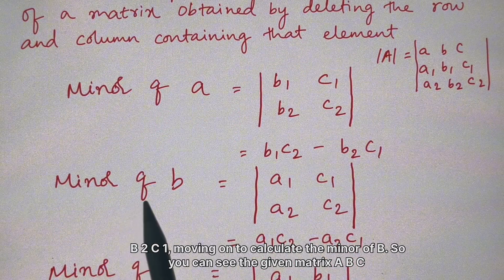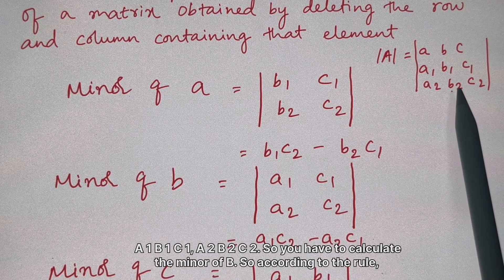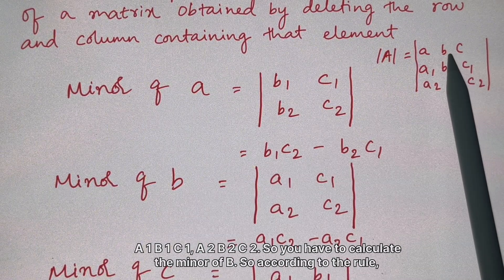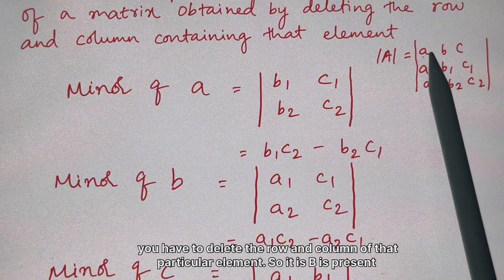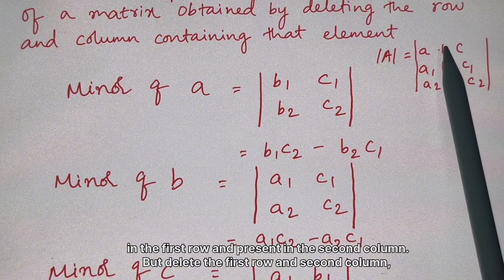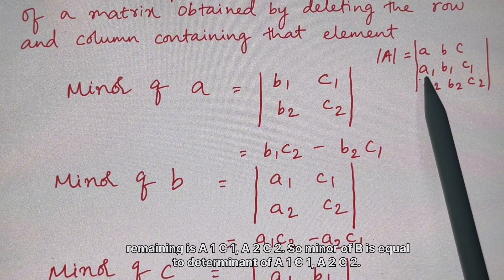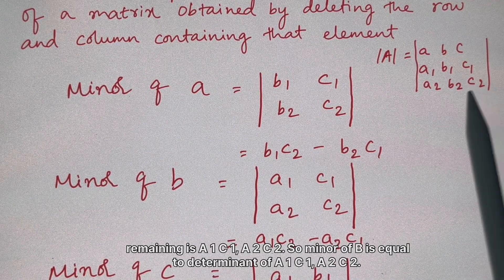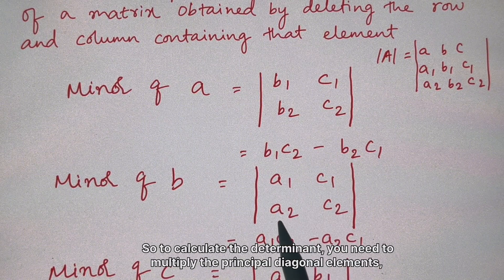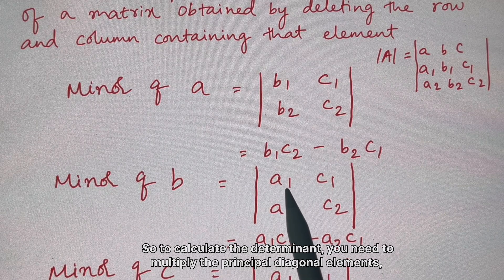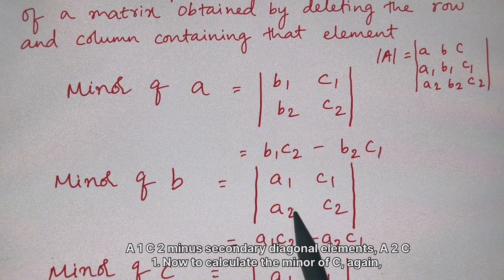Moving on to calculate the minor of 'b': in the matrix [a, b, c; a1, b1, c1; a2, b2, c2], element 'b' is in the first row and second column. Deleting that row and column, the remaining submatrix is [a1, c1; a2, c2]. So minor of b equals the determinant: a1·c2 minus a2·c1.